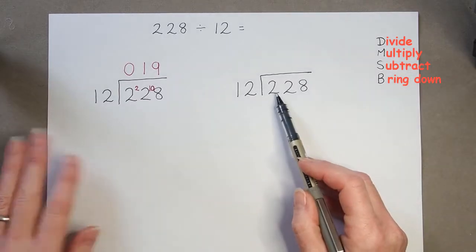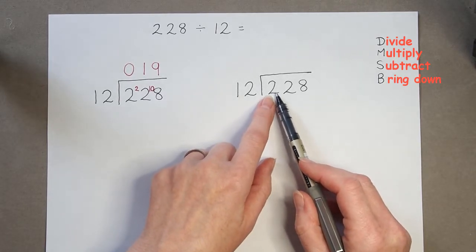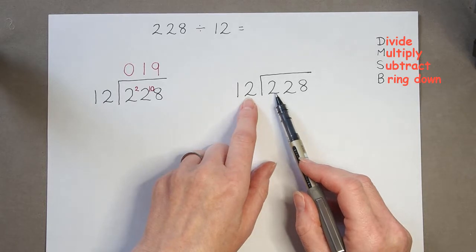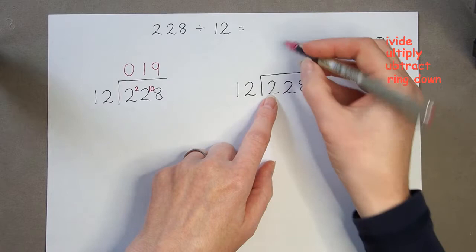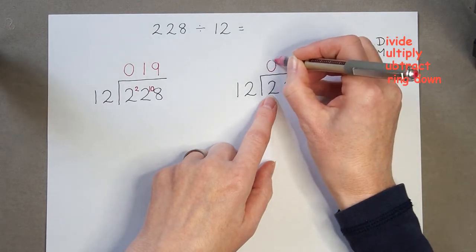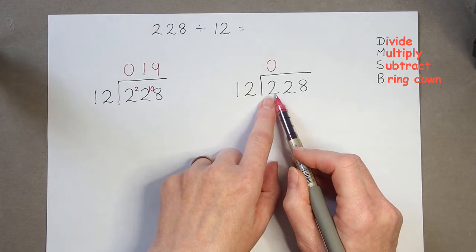So we're doing our normal division. So here we've got 2 divided by 12, which we know we can't do. It's not enough, so we've got a 0. And we would have 2 left over, a remainder of 2, which we could write up here.